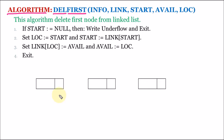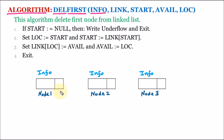Let us suppose we have a linked list which contains three nodes. Every node of the linked list contains two parts. The first part is the info part, which contains the information. For example, the number 7 is stored in node 1, the number 9 is stored in the info part of node 2, and 11 is stored in the info part of node 3.